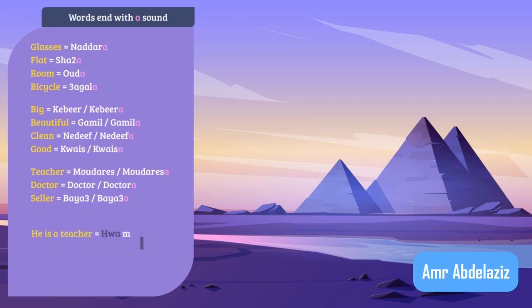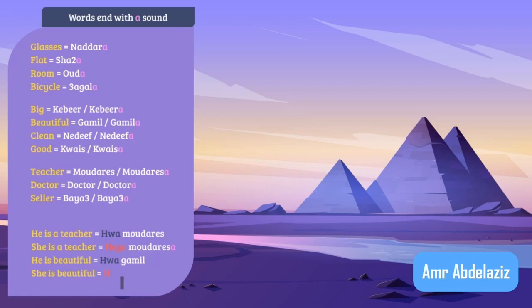For example: 'He is a teacher' — 'huwa mudarris'. 'She is a teacher' — 'hiya mudarrisa'. 'He is beautiful' — 'huwa gameel'. 'She is beautiful' — 'hiya gameelah'.